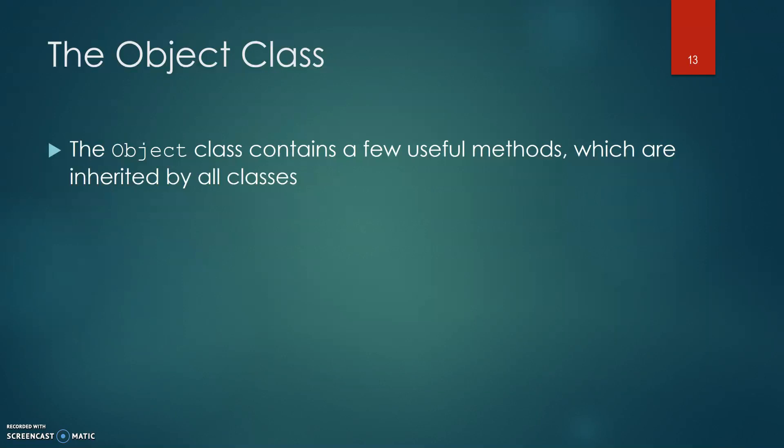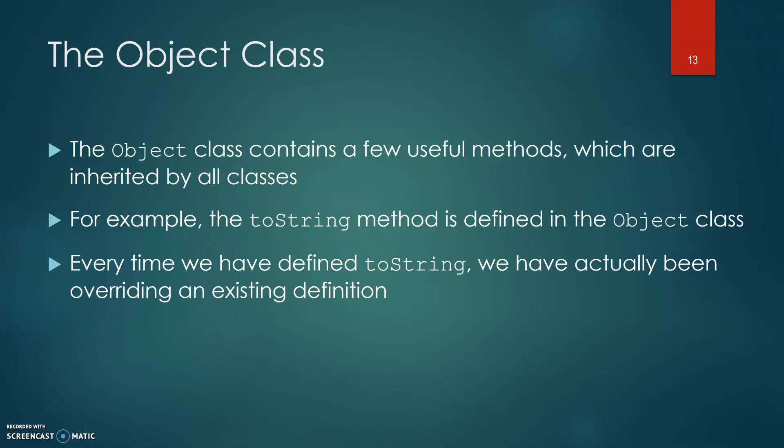The Object class contains a few useful methods, which are inherited by all classes. For example, the toString method is defined in the Object class.